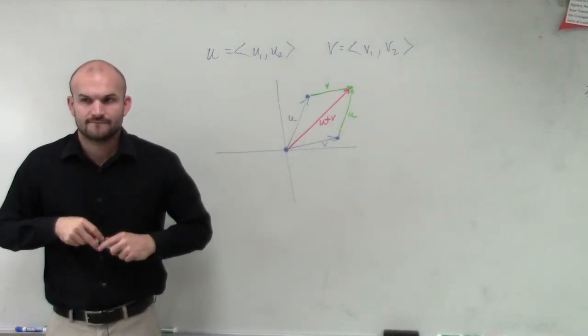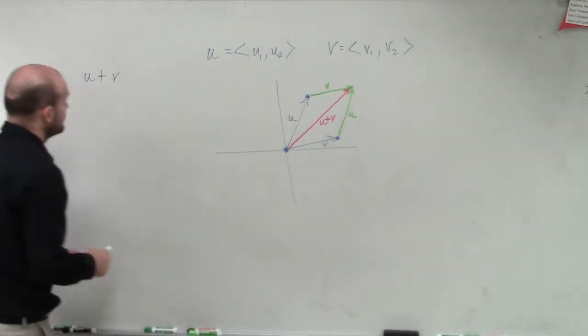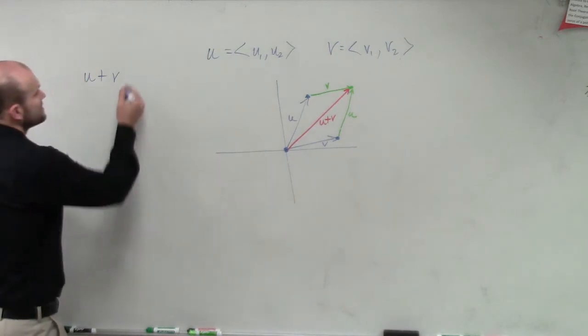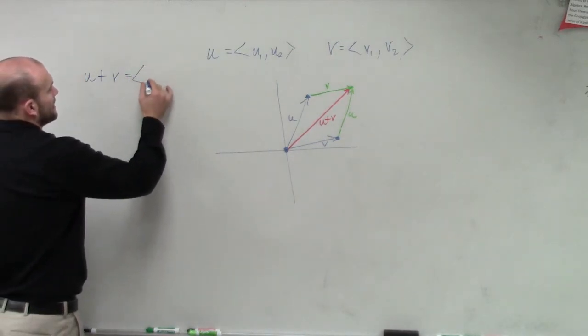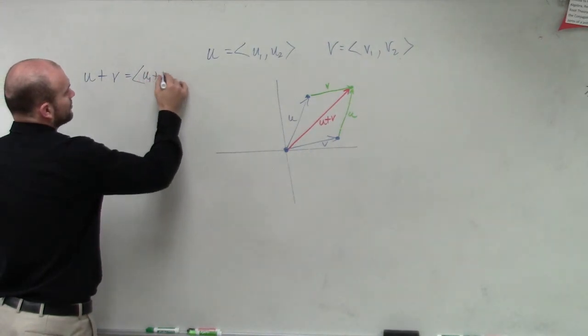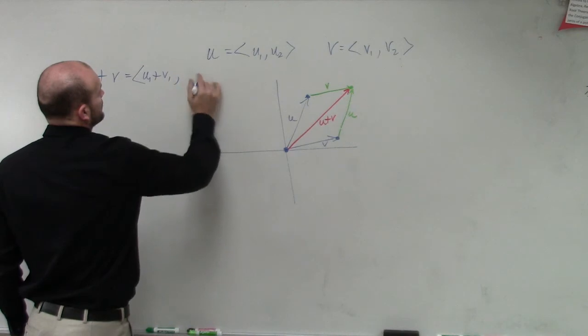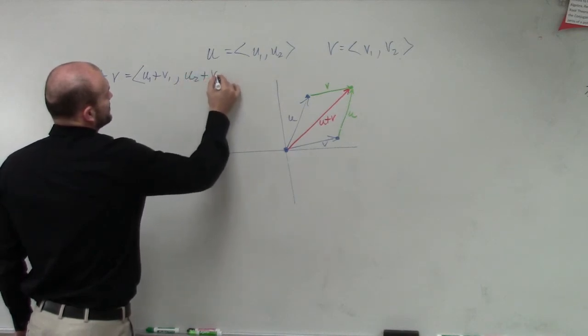Did everybody see that? So how do we algebraically kind of represent this? Well, if I have u plus v, what that simply is going to do is just say that's going to mean u1 plus v1 comma u2 plus v2.